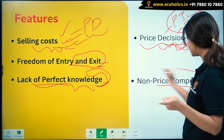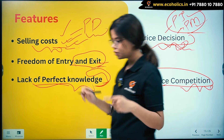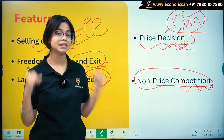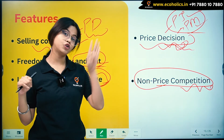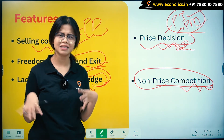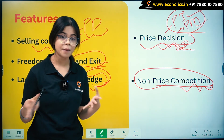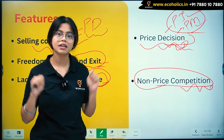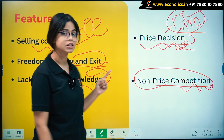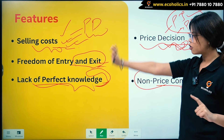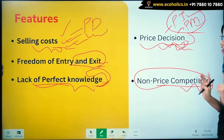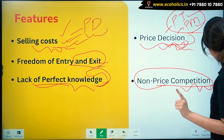Non-price competition is also one of the features of monopolistic competition. To summarize, the features are: selling cost, freedom of entry and exit, lack of perfect knowledge, price decision, and non-price competition.